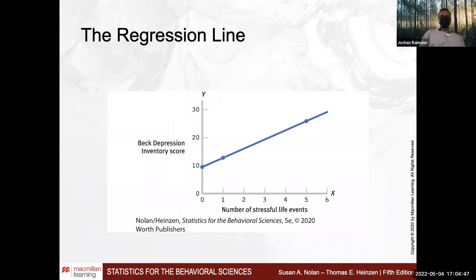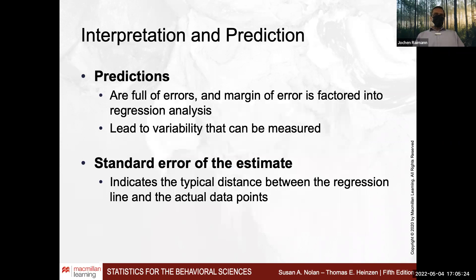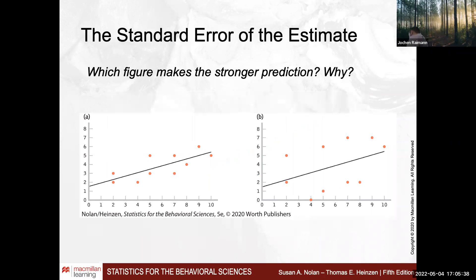Using the example of the Beck Depression Inventory score as a function of number of stressful life events, the idea of prediction is that a psychologist can use this as a prediction tool. A patient comes into practice and the psychologist uses the number of life events to quantify how likely the patient is depressed and what degree of depression they are facing. Not everything is easily predictable, so prediction has limitations.